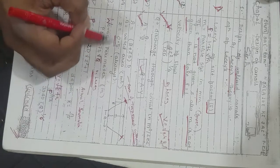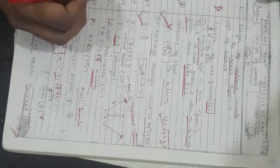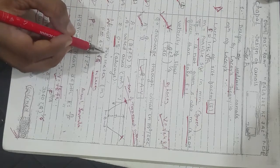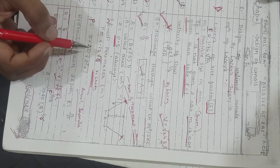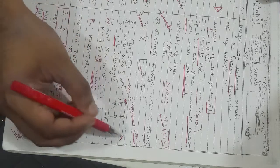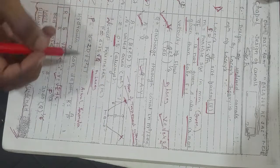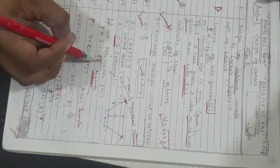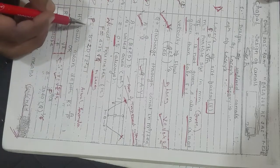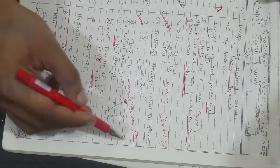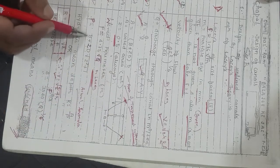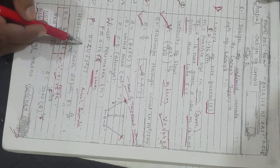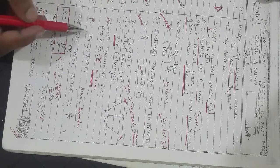B is the base width of the channel. Z is the horizontal component of side slope; if not given, take it as 0.5. The formula given by Lacey for wetted perimeter is P = 4.75√Q. The actual formula for trapezoidal cutting perimeter is P = B + 2D√(z² + 1).